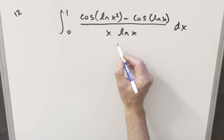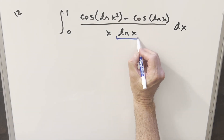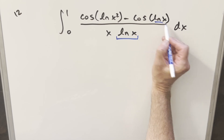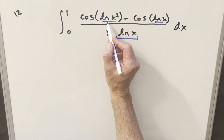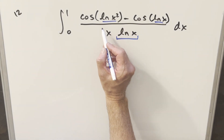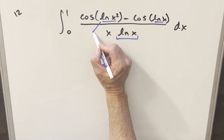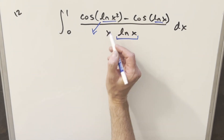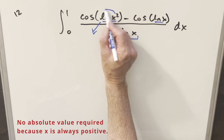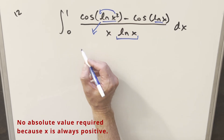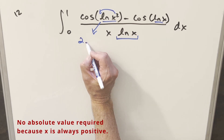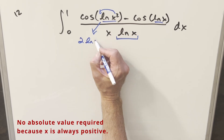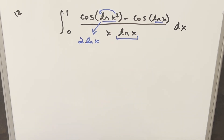The thing I noticed first here is that we've got natural log x pretty much everywhere. This one right here — natural log x squared — is a little different, but with log properties I can bring the 2 out front and we can look at this as just 2 ln x.